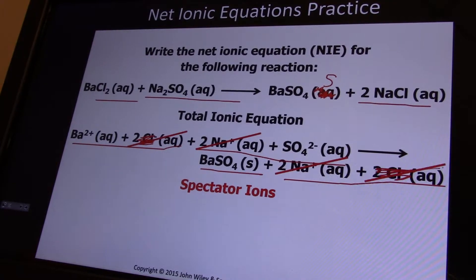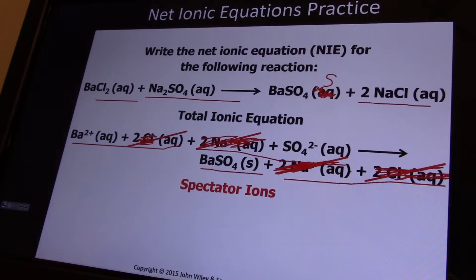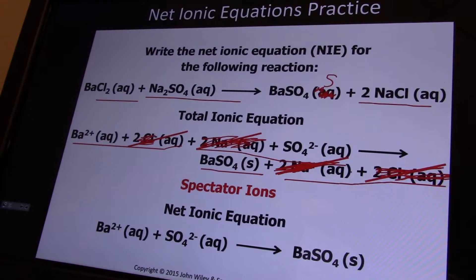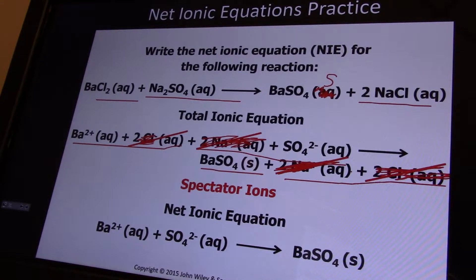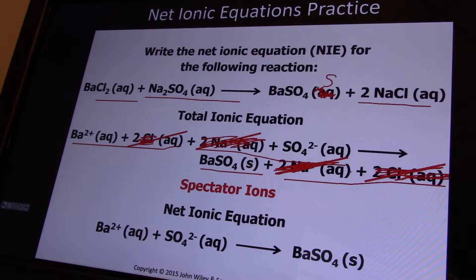Two chlorines on the left, two on the right. Two sodium on the left, two on the right. The net ionic equation is: Ba²⁺ plus SO₄²⁻ forms barium sulfate. Is it balanced? One barium on each side, one sulfate on each side. Total charge on the left is zero - there's a plus two and a minus two. Total charge on the right is zero. It is balanced.